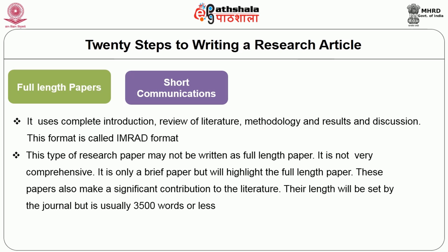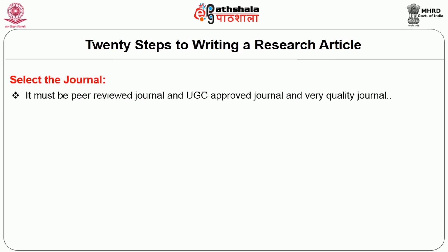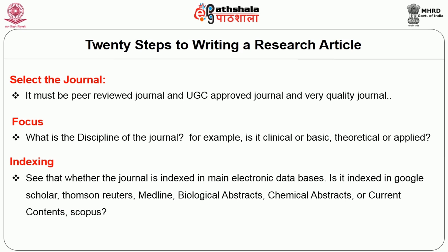In short communications, methods, results, and discussion may be combined into a single section. Rapid communications give only the hard findings of the study. Step 6: Select the journal — it must be a peer-reviewed, UGC-approved, quality journal. Focus on the journal's discipline — clinical, basic, theoretical, or applied. Check whether the journal is indexed in main electronic databases such as Google Scholar, Thomson Reuters, Medline, Biological Abstracts, Chemical Abstracts, Current Contents, or Scopus.